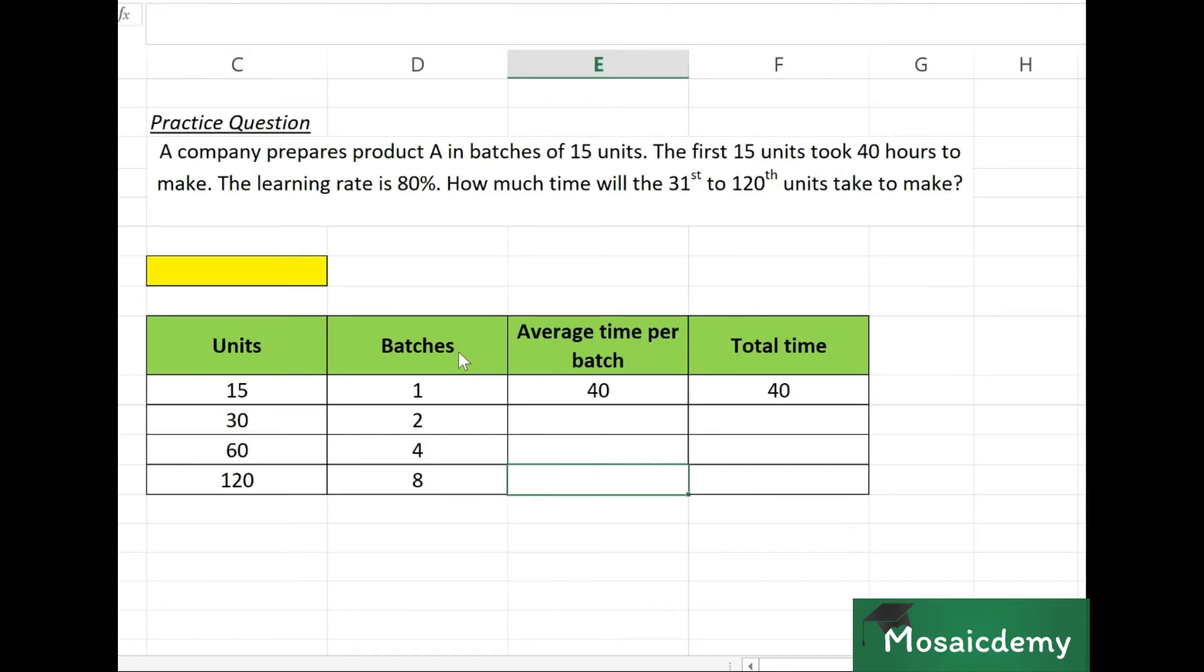Now we can simply fill out the table. 80% learning rate, so 40 times 80% gives us 32. Ctrl+D to move down the formula. 32 times 80% gives us 25.6, and 25.6 times 80% gives us 20.48. We have the average time.